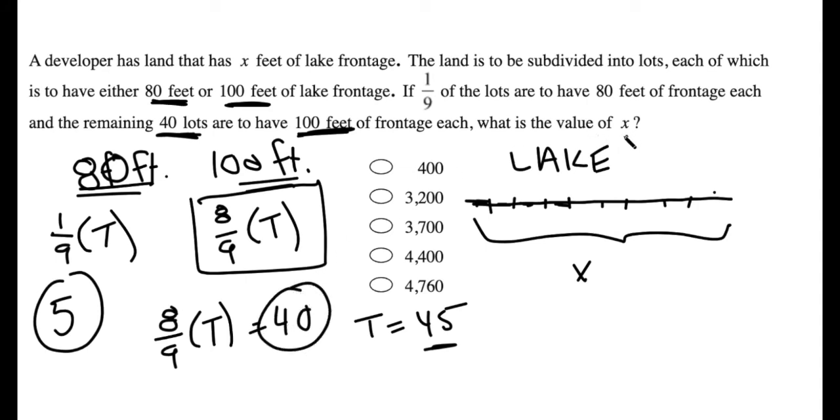So how many total feet of lake frontage am I dealing with? Well, five 80-foot lots, that's 400, and 40 hundred-foot lots, that's 4,000. 400 plus 4,000 gives me 4,400, or D.